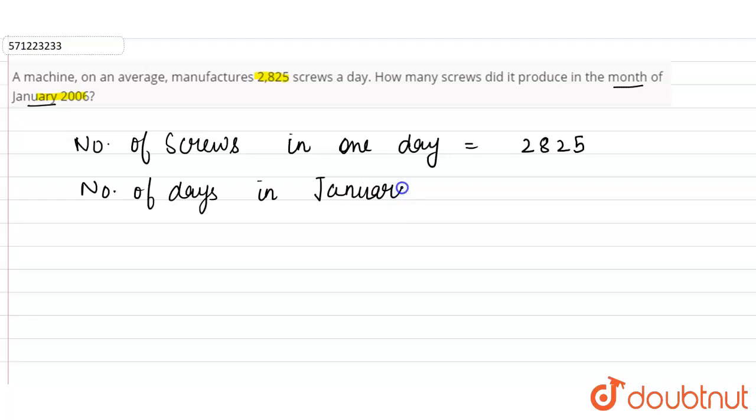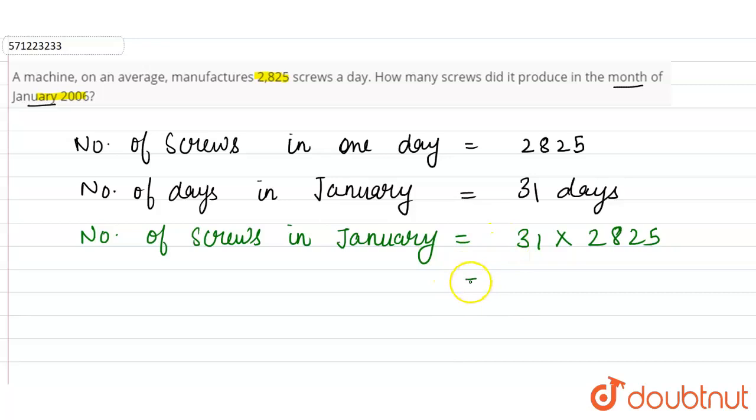In one day, the company is manufacturing 2,825 screws, so in 31 days, the number of screws in January will be equals to 31 into 2,825. 31 into 2,825, so this is equals to 87,575.